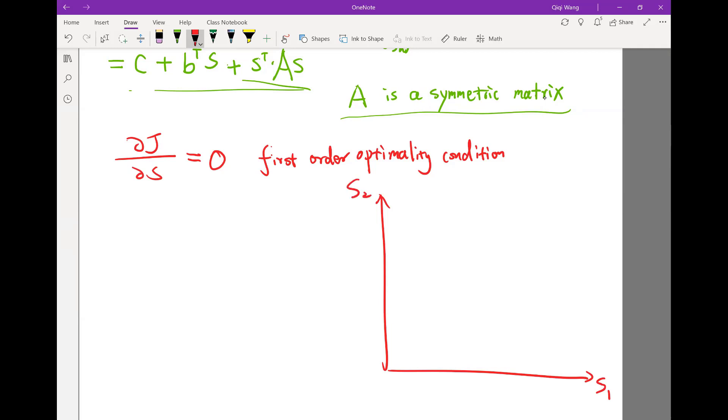We have s1 and s2. And in order to visualize the function j on this two-dimensional plane, we have to start drawing contours of this quadratic. So let me just go to MATLAB and draw you a simple contour.